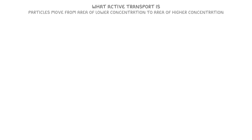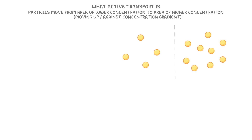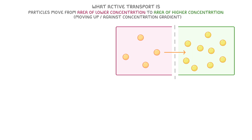Active transport is the process where particles move from an area of lower concentration to an area of higher concentration, which means they're moving up or against their concentration gradient. In this image they'd move from the area where the concentration is lower, then through the membrane, to the area where the concentration is higher. This is basically the opposite of diffusion, where particles move from high to low concentration.